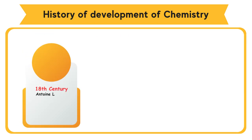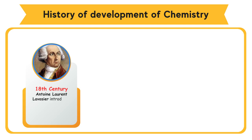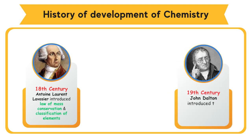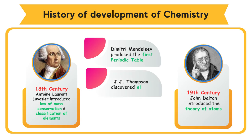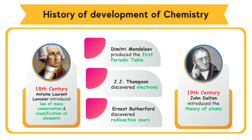In the 18th century, Antoine Laurent Lavoisier introduced the law of mass conservation and classification of elements. In the 19th century, John Dalton introduced the theory of atoms; Dmitry Mendeleev produced the first periodic table; J.J. Thomson discovered electrons; and Ernest Rutherford discovered radioactive sources.